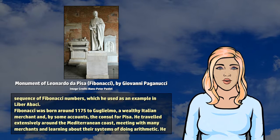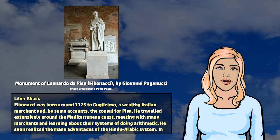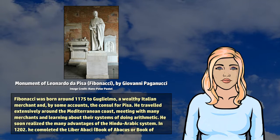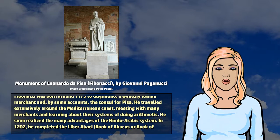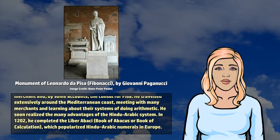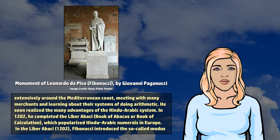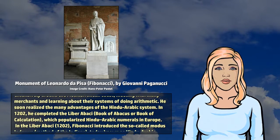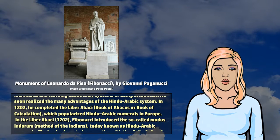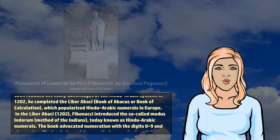Fibonacci was born around 1175 to Guglielmo, a wealthy Italian merchant and, by some accounts, the consul for Pisa. He traveled extensively around the Mediterranean coast, meeting with many merchants and learning about their systems of doing arithmetic. He soon realized the many advantages of the Hindu-Arabic system. In 1202, he completed the Liber Abaci, Book of Abacus or Book of Calculation, which popularized Hindu-Arabic numerals in Europe.